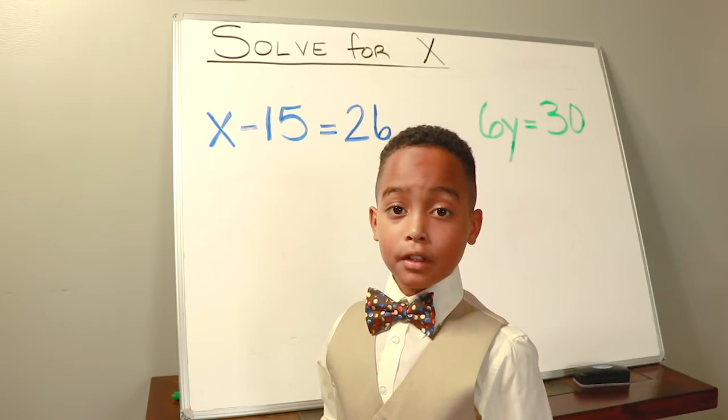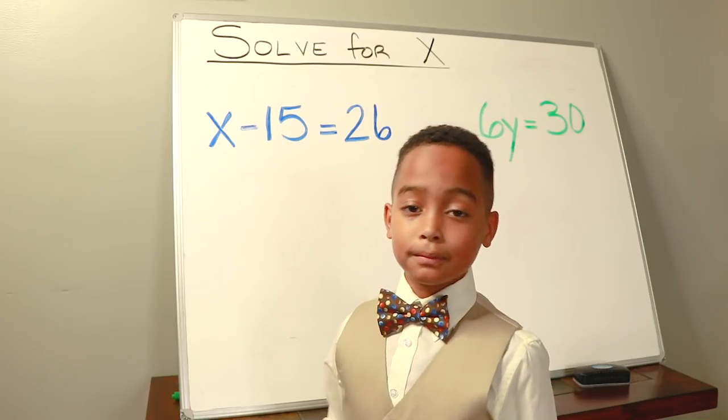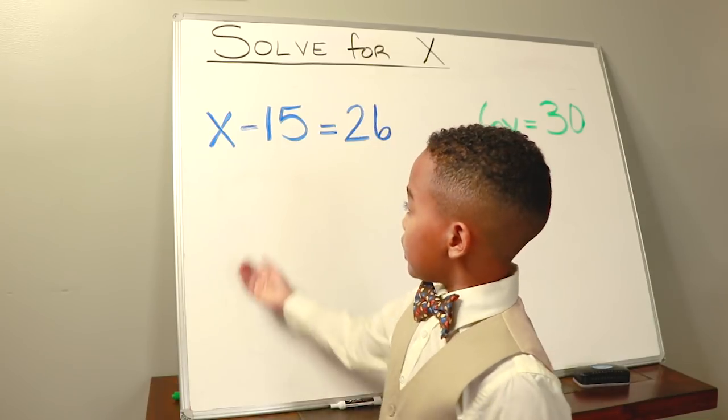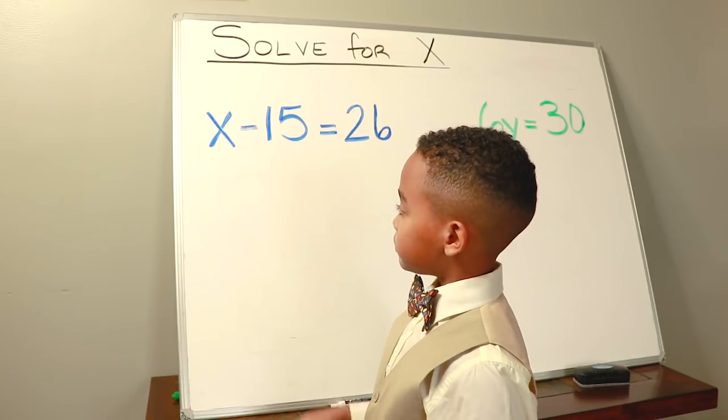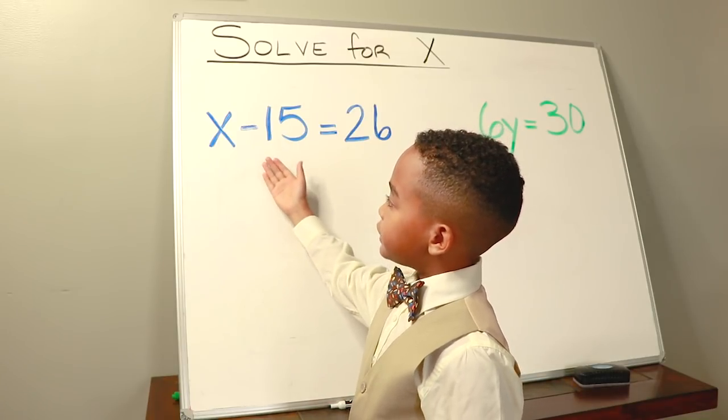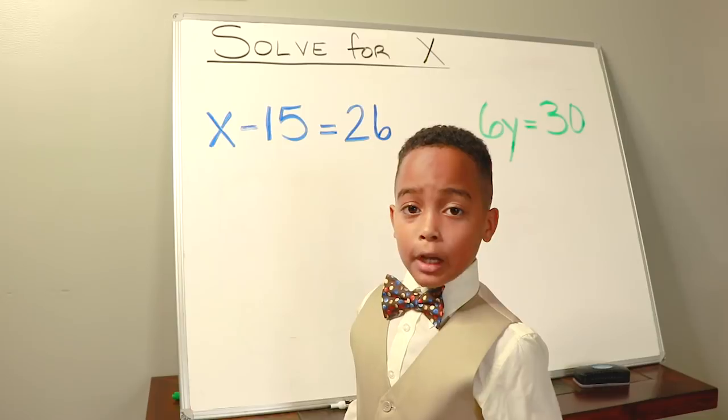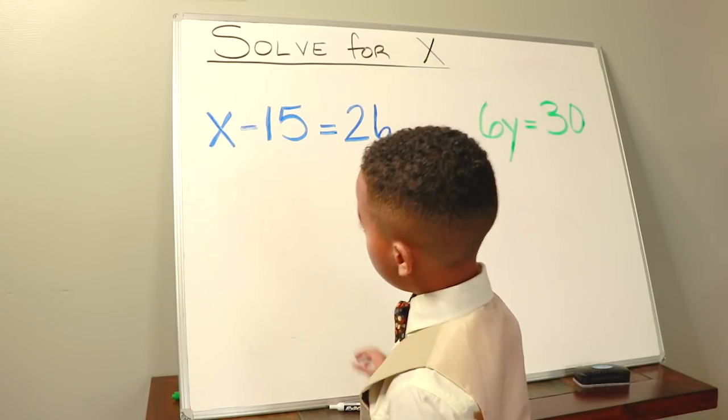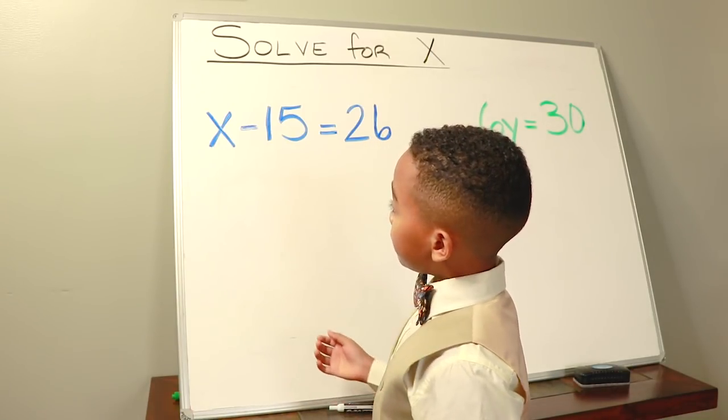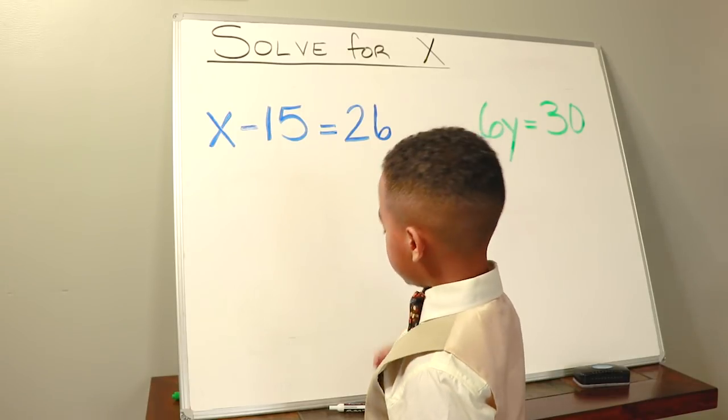Okay, so what will be the inverse operation of this operation? We have subtraction, so the inverse operation will be addition. We're gonna add 15 to both sides.